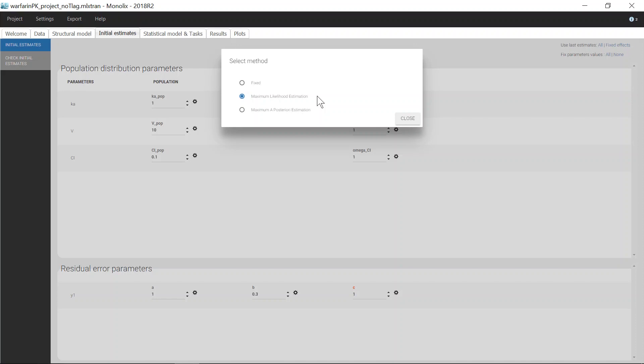If I am very certain of the prior information and have no confidence in the data to estimate Ka-pop, I can just fix Ka-pop to 1 with this option. In that case, it will not be estimated.